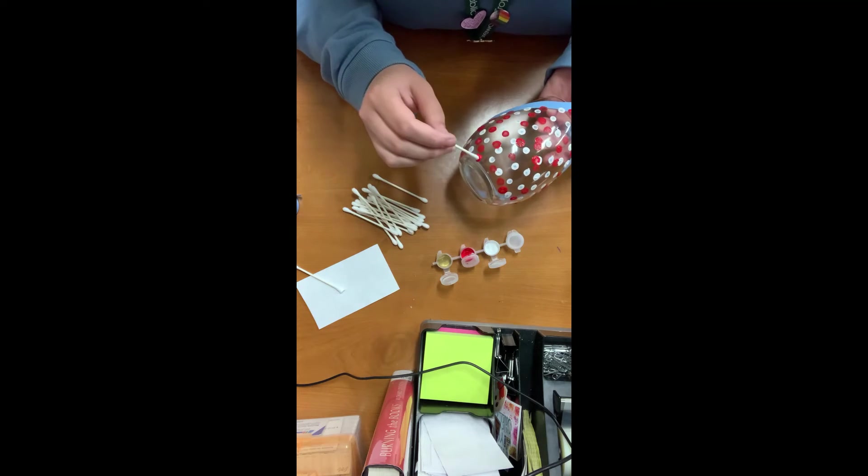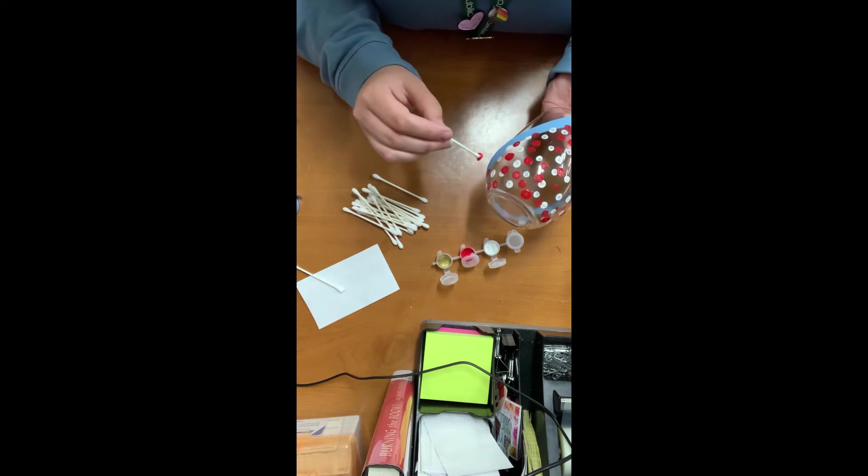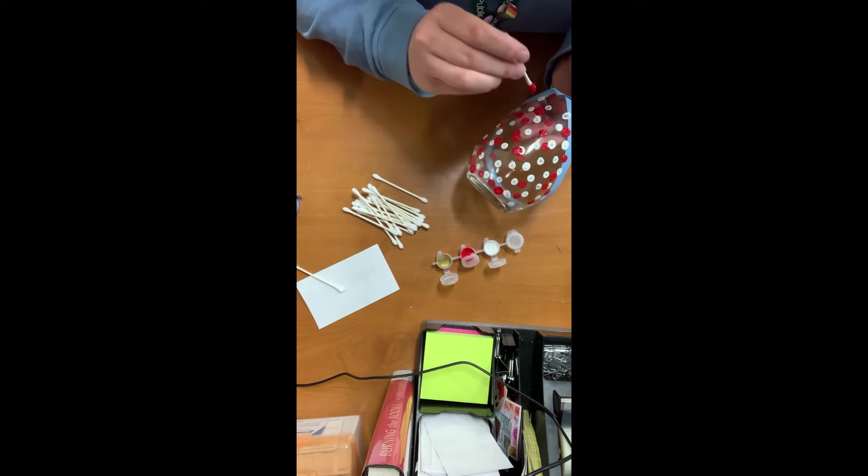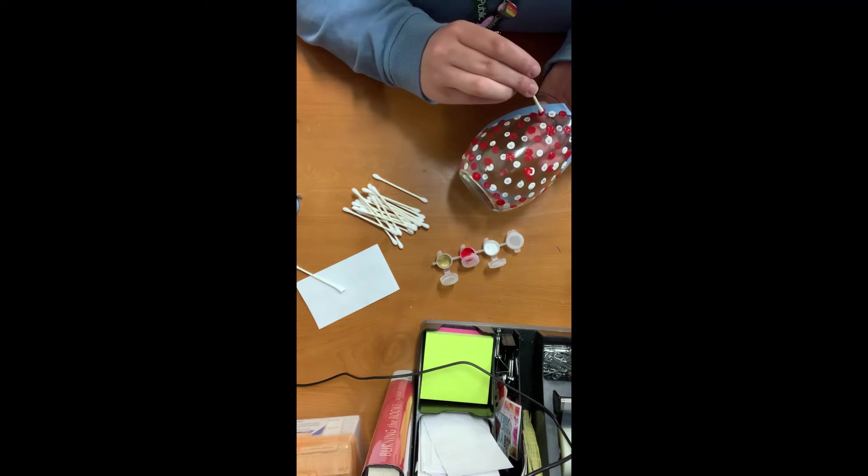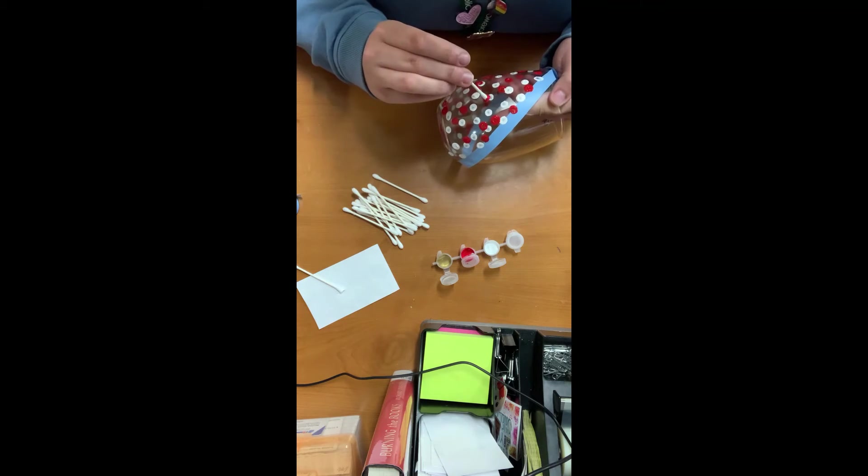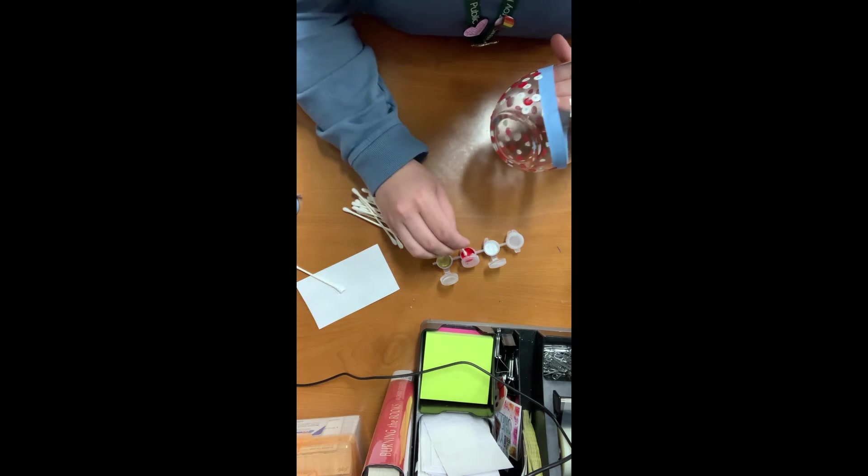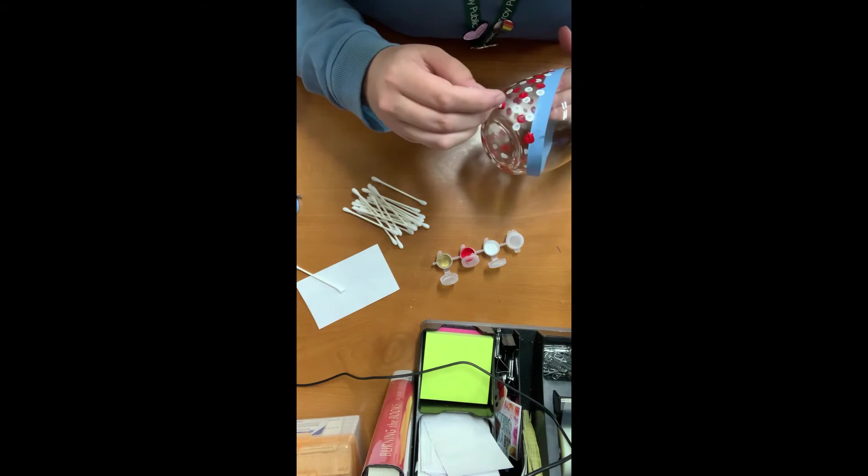And since I'm doing mine, the colors while they're still wet, if you do overlap at all, you're going to get the colors are going to mix. So just keep that in mind. You could, if you wanted to, do a color, let it dry, add another coat. That's completely up to you. I'm just kind of going for it.